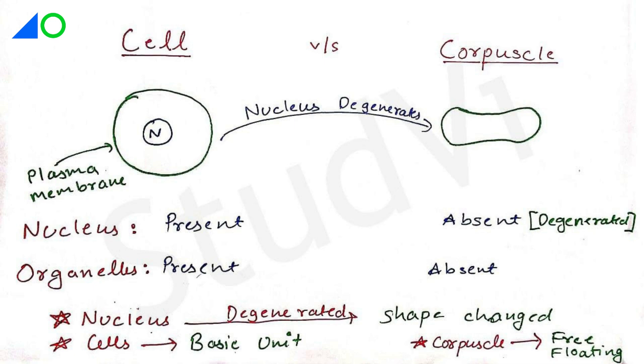Also, cell organelles are present in the cell, like mitochondria, Golgi bodies, etc., but are absent in the corpuscle.